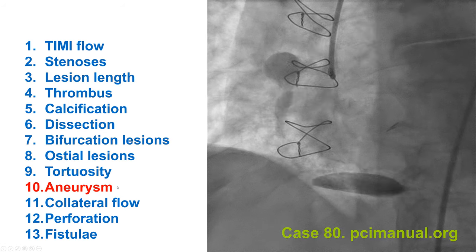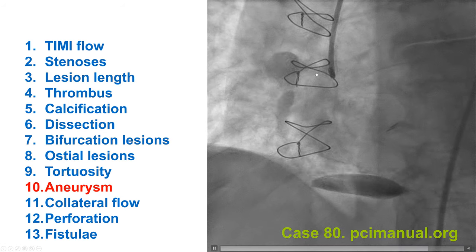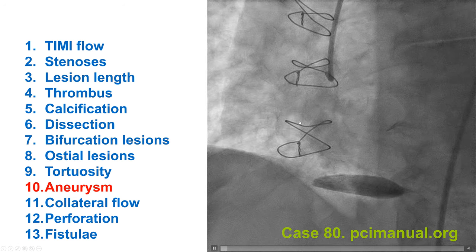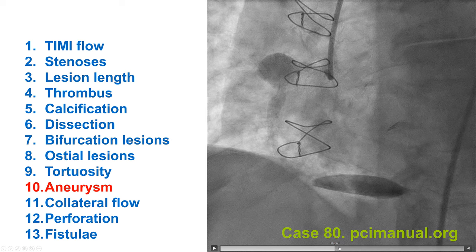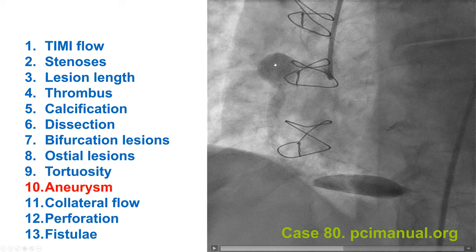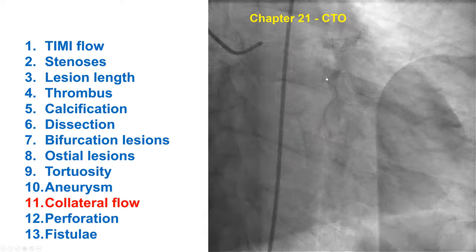Characteristic 10 is aneurysm. Aneurysms are defined as coronary artery diameter more than 1.5 times the reference diameter. Here we have a clear aneurysm in the proximal right coronary artery. Case 80 in the PCI manual provides an example of such a case treated with implantation of a covered stent.